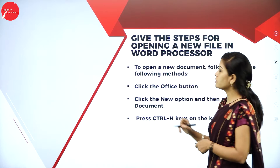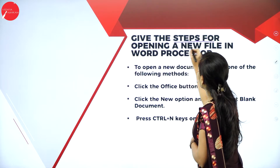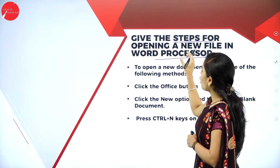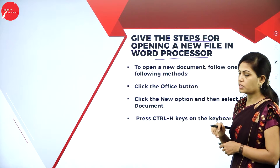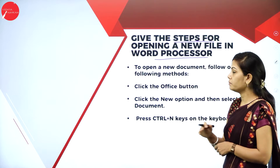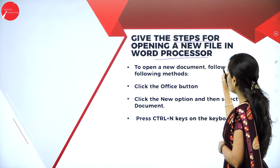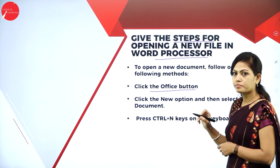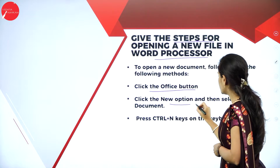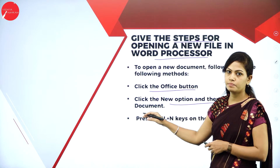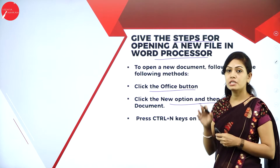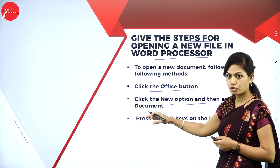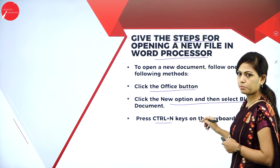The next important question: give the steps for opening a new file in a word processor — very important question for three marks. To open a new document, follow one of the following methods: click the Office button, click the New option, and then select Blank Document. First you need to select MS Word, then go to the New option and select Blank Document.